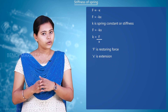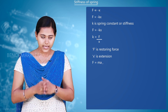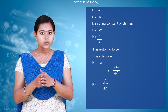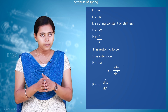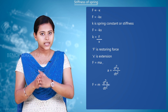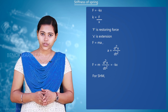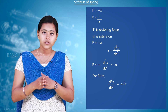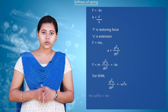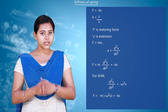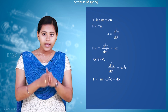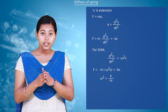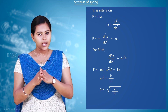We have F = -kx, and we also know that F = m·(d²x/dt²). Therefore m·(d²x/dt²) = -kx. From the equation of simple harmonic motion, we have d²x/dt² = -ω²x. Substituting, we get m·(-ω²x) = -kx, which gives ω² = k/m, and therefore ω = √(k/m), where k is the spring constant and m is the mass of the body.